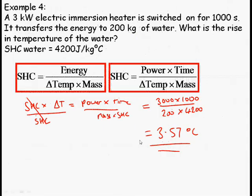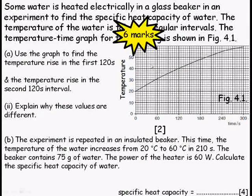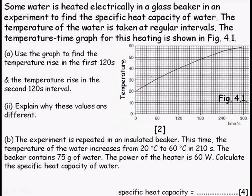This is example 5, and it's an IGCSE question with 6 marks. Pause the video and carefully read this question. The first part is quite simple. It's saying, use the graph to find the temperature rise in the first 120 seconds.